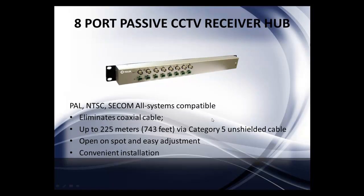An 8-port passive CCTV hub — this is the Valex 8-port hub. It is PAL, NTSC, and all-system compatible. It eliminates coax cabling and supports up to 225 meters — 743 feet — via Category 5 unshielded cable. Your Cat5 cable comes in here, you open it up, and connect the positive and negative of each camera. With one Cat5 cable you can hook up 4 cameras, so using two cables you can run 8 cameras using Valex baluns and this passive hub.